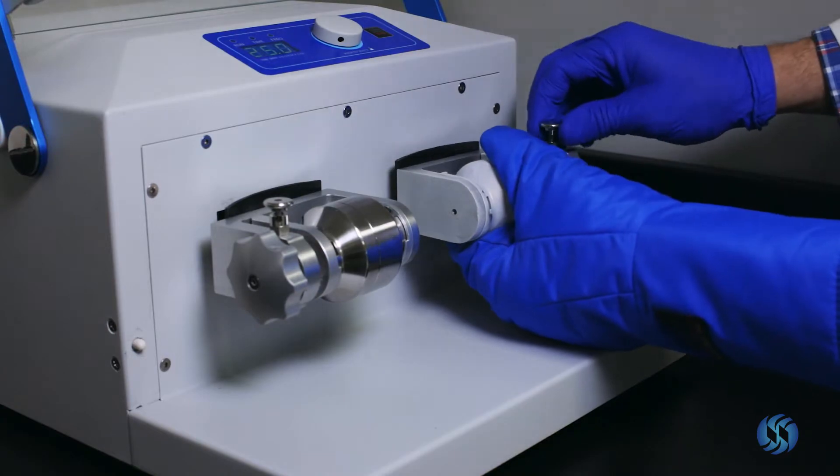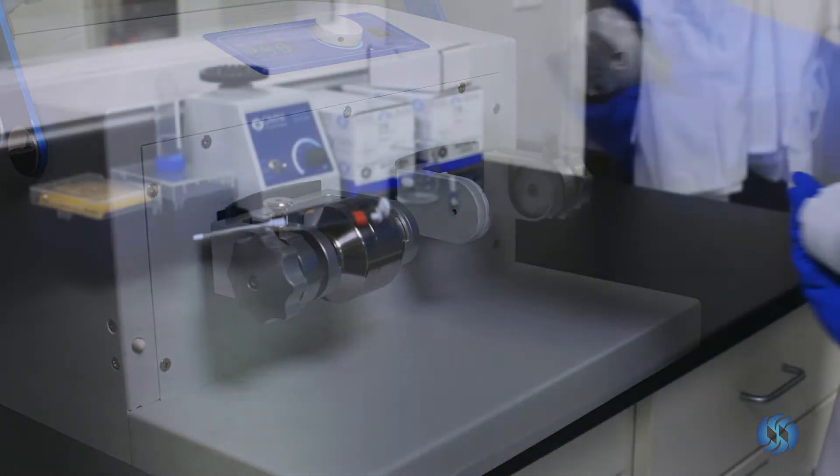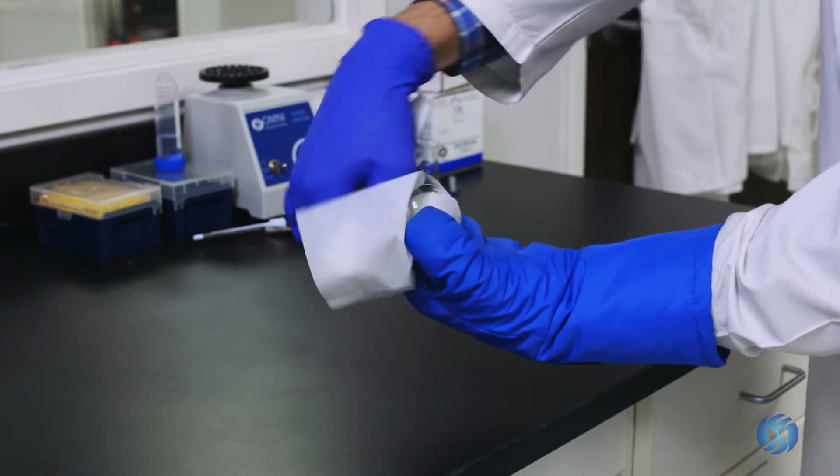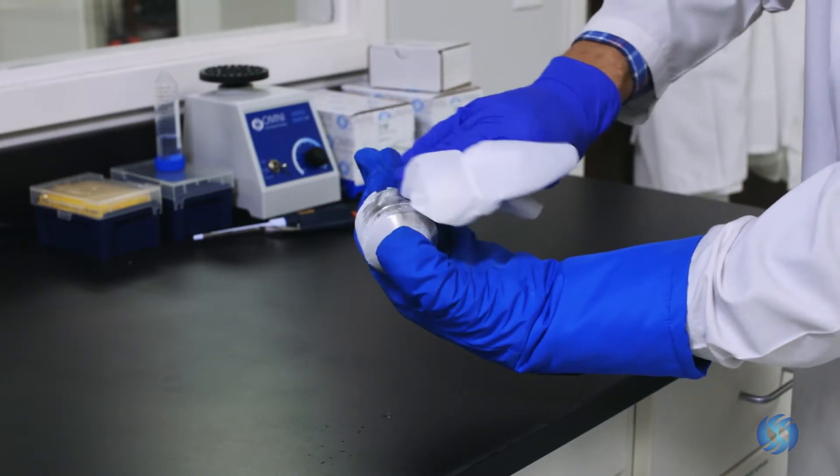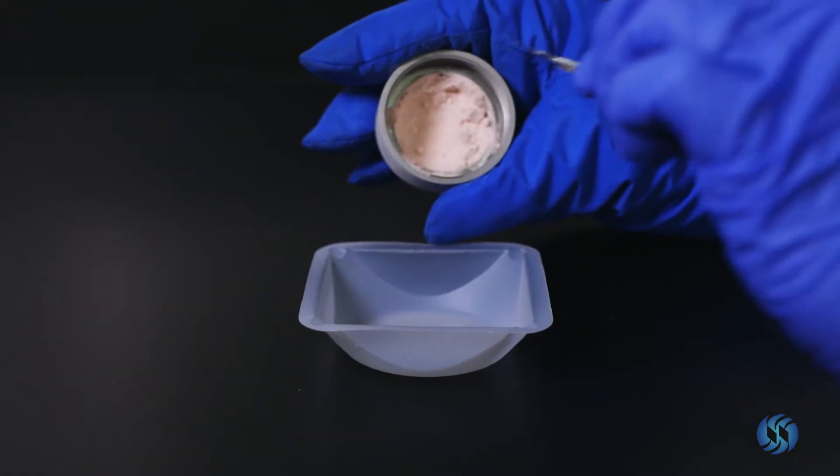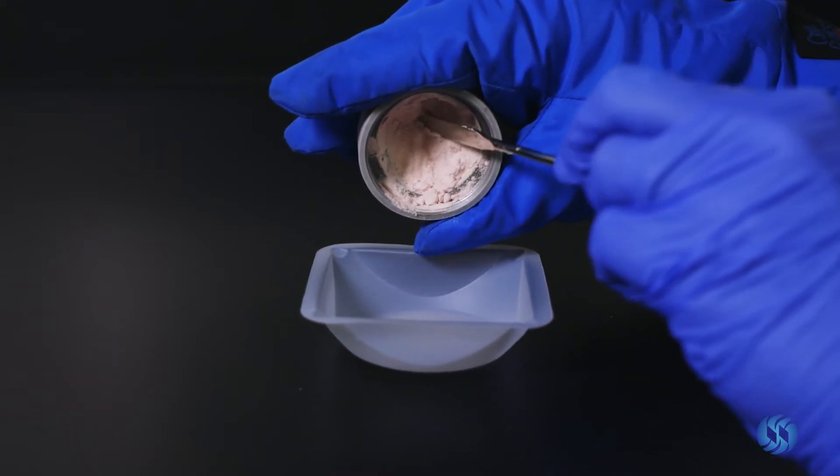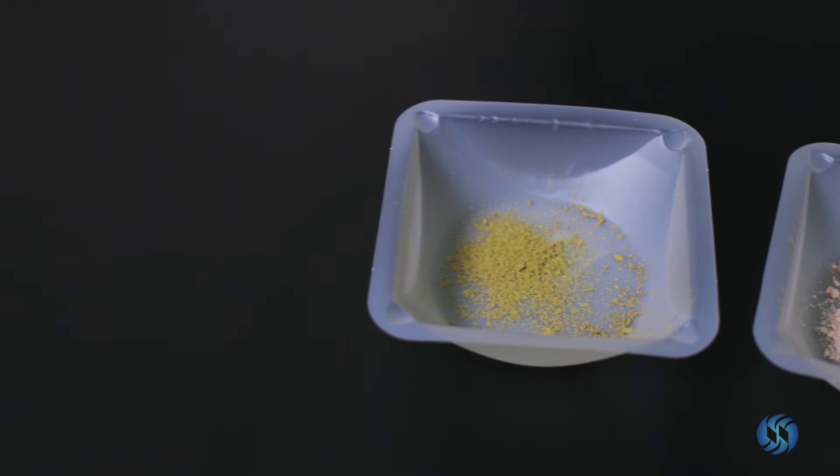Upon completion, unfasten the milling jar from the BeadRuptor 96 and remove any excess condensation. Your cannabis sample is now ready for testing.